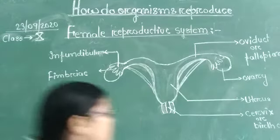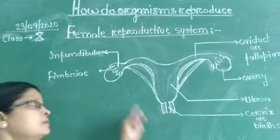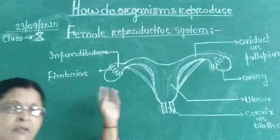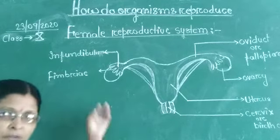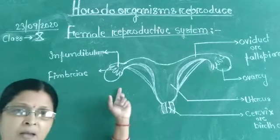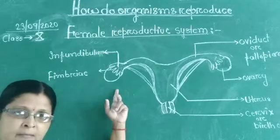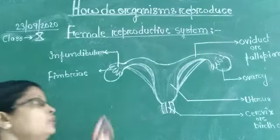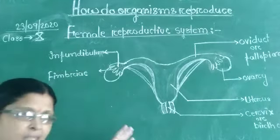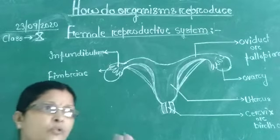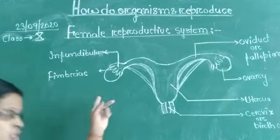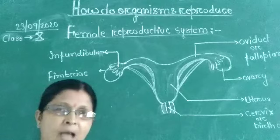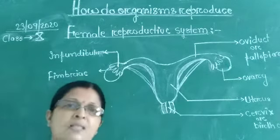In the female reproductive system, the ovary is the main female sex organ. It is called the main female reproductive organ because the ovum, or eggs, are produced inside the ovary. The ovary also acts as an endocrine gland and secretes two types of hormones.